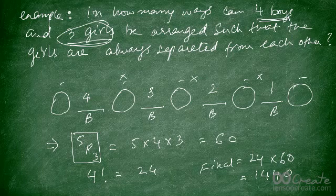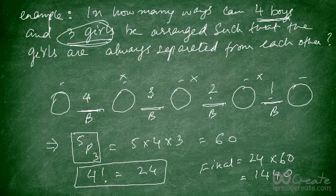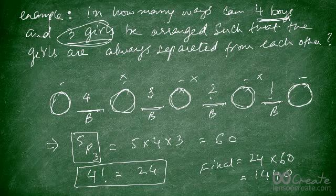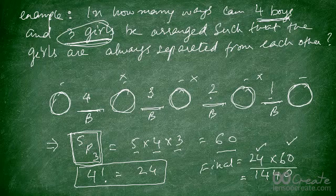To recap: first arrange the boys using 4 dashes, giving 4! = 24. Because there are 4 boys, there are always 5 positions available for the girls — one more than the number of boys. We have only 3 girls, so we use 5P3 = 5 × 4 × 3 = 60. Multiplying: 24 × 60 = 1,440. This ensures all girls are separated from each other.